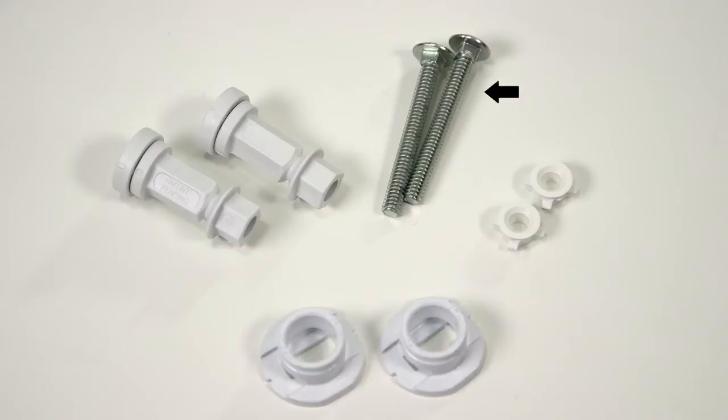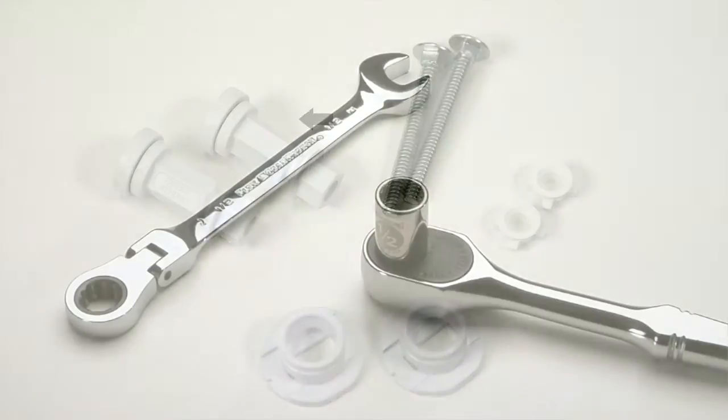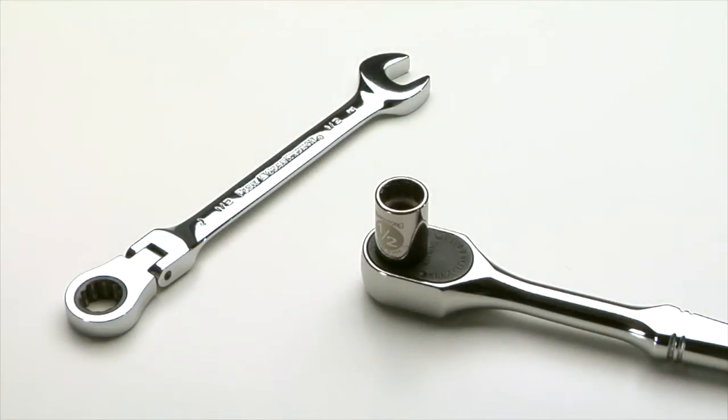The seat comes with two bolts, two adjustable easy clean and change bolt heads, two finned bushings, and two stay tight nuts. The only tool you'll need is a half inch wrench.